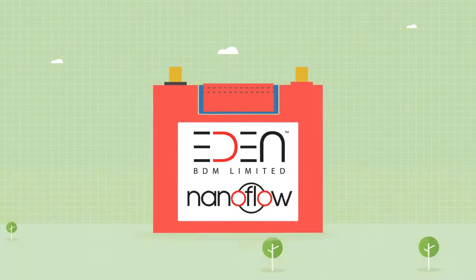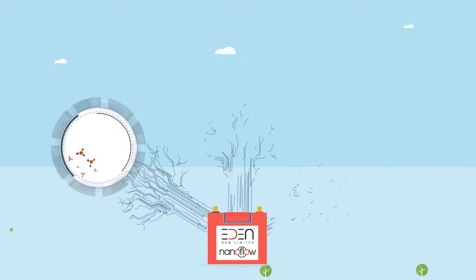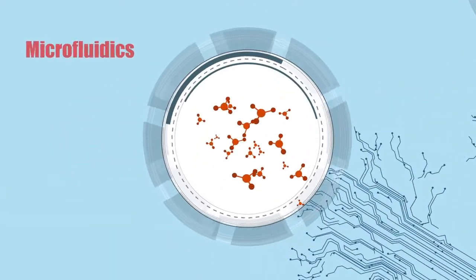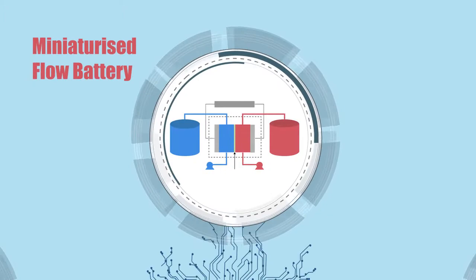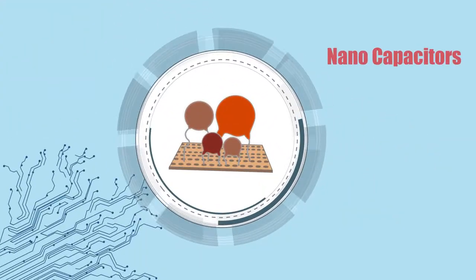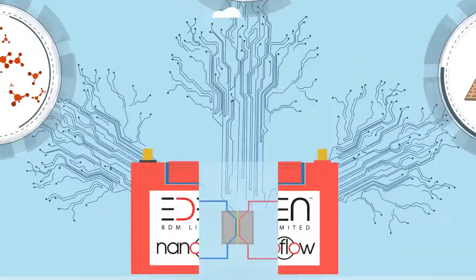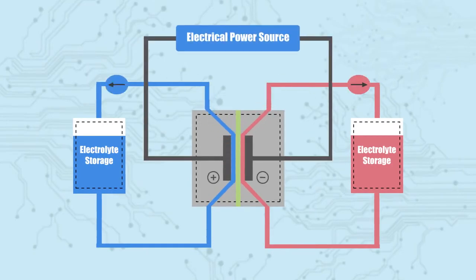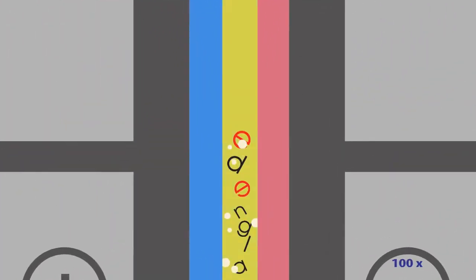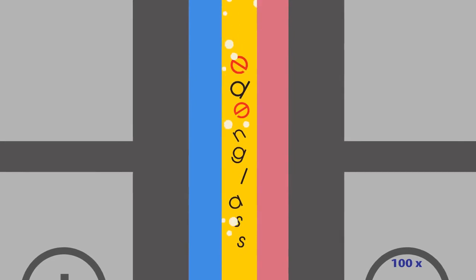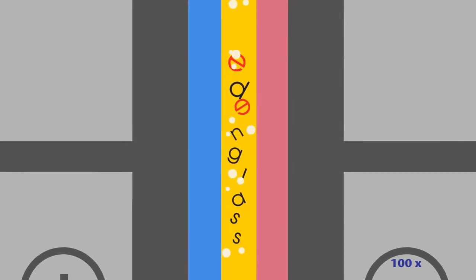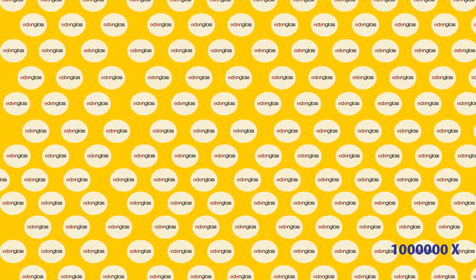The Eden NanoFlow battery combines three unique technologies into one device: microfluidics, miniaturized flow battery architecture, and nano capacitors. It takes the concept of a large redox flow battery and miniaturizes it, removing the central membrane and replacing it with a third electrolyte containing Eden glass, a new proprietary material made of nano capacitors.